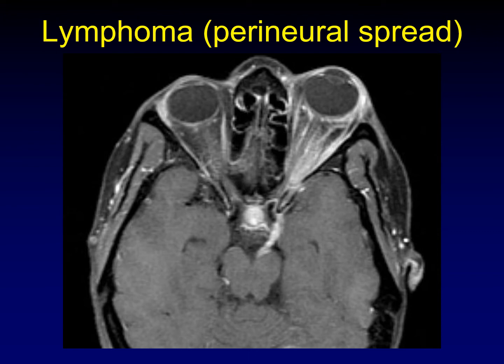This is a lymphoma that arose within the orbit, and there is perineural spread back along the third cranial nerve. I know that that is the third cranial nerve because of the characteristic anatomy where it is coming straight out of the interpeduncular cistern to cross the supracellar cistern and dive into the cavernous sinus.